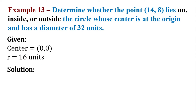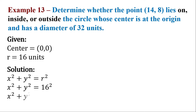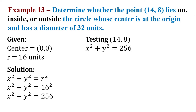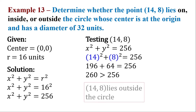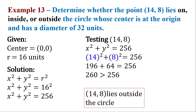Now to solve for the equation of the circle, let's write the formula and substitute the given. 16 squared is equivalent to 256. Now let's test the point 14 comma 8 if it lies on, inside, or outside the circle. Substitute 14 and 8 into the equation: 14 squared is 196 and 8 squared is 64. Adding them gives 260. Since 260 is greater than 256, the point 14 comma 8 lies outside the circle.